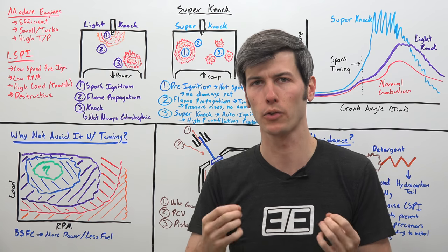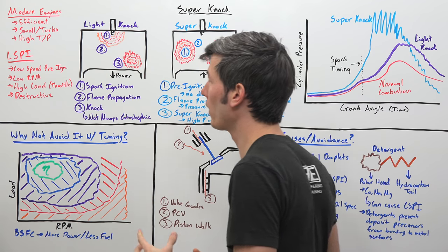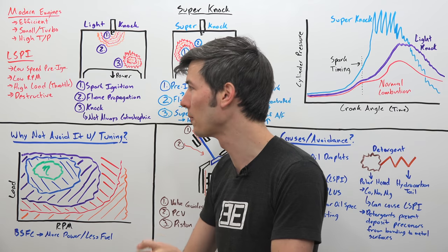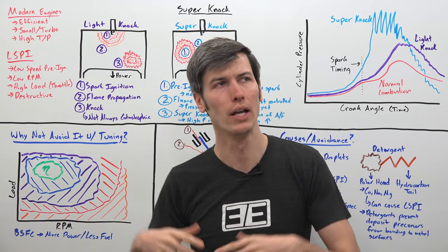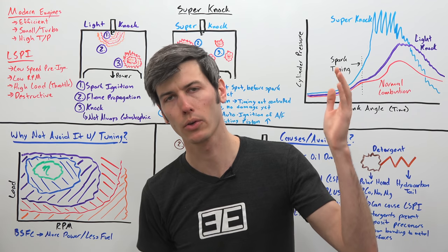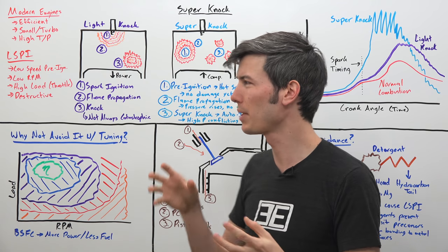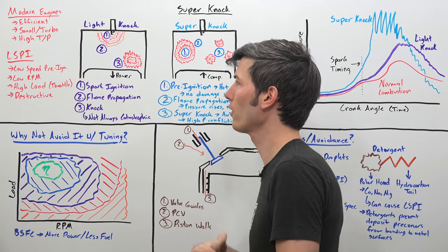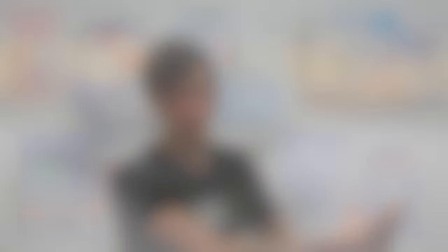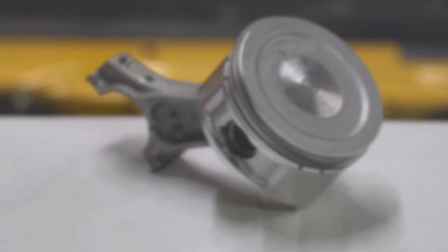One of these issues being low speed pre-ignition, LSPI. This occurs in modern engines often at low RPM, meaning low engine speeds, and at high load, so high throttle. For example, if you're at a stoplight taking off from a dead stop, or if you're cruising down the highway in top gear and you give it full throttle, you're going to be at a low RPM and a high load. That's when LSPI could occur, and LSPI could lead to SuperKnock occurring, which could then be quite destructive for your engine.